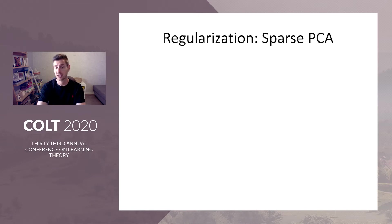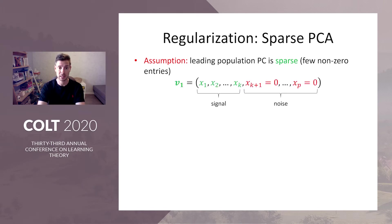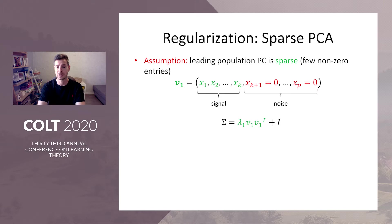How to proceed? Regularization is one popular option, and it many times hinges upon sparsity assumptions. For concreteness, let's fix the sparsity assumption. That would be the L0 sparsity, namely the leading PC has at most K non-zero entries.